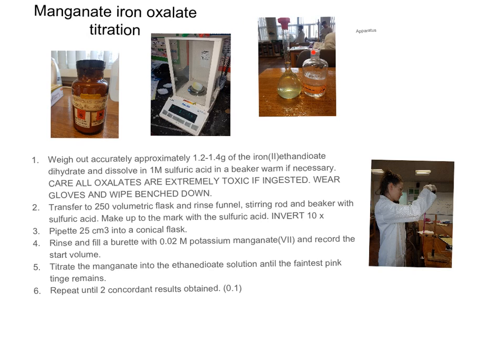We then transferred the contents to a 250 volumetric flask and made it up to 250 with 1 molar sulfuric acid to make sure it's extremely acidic. So we had the known mass of the ethanedioate in the flask in extremely acidic conditions. What we then did was pipette 25 cm³ of this into a conical flask.